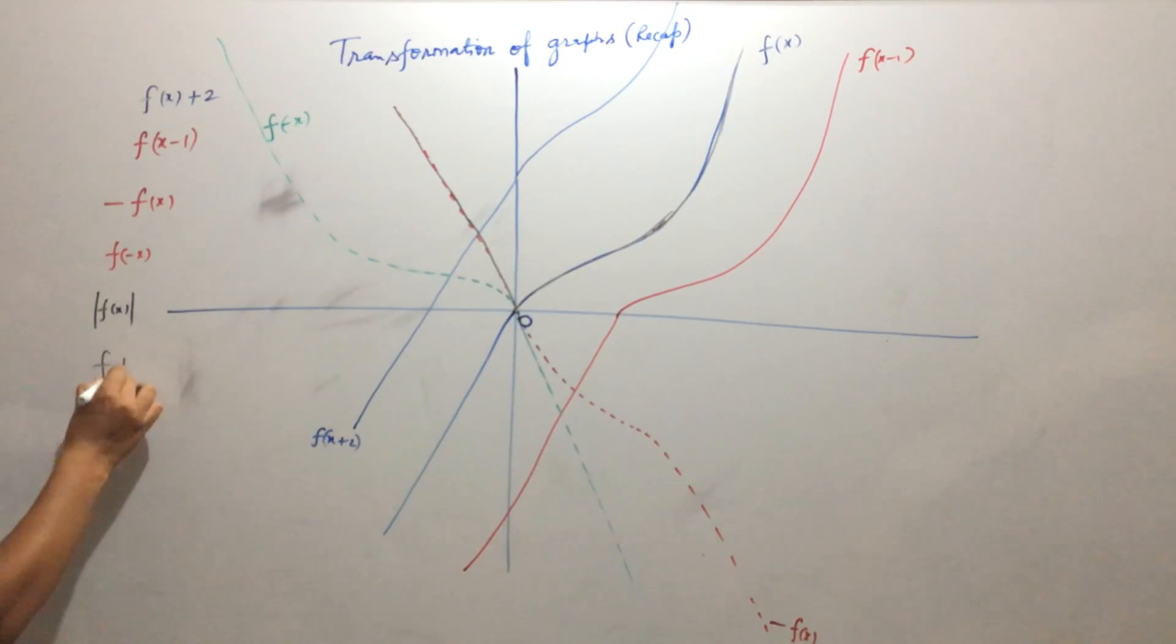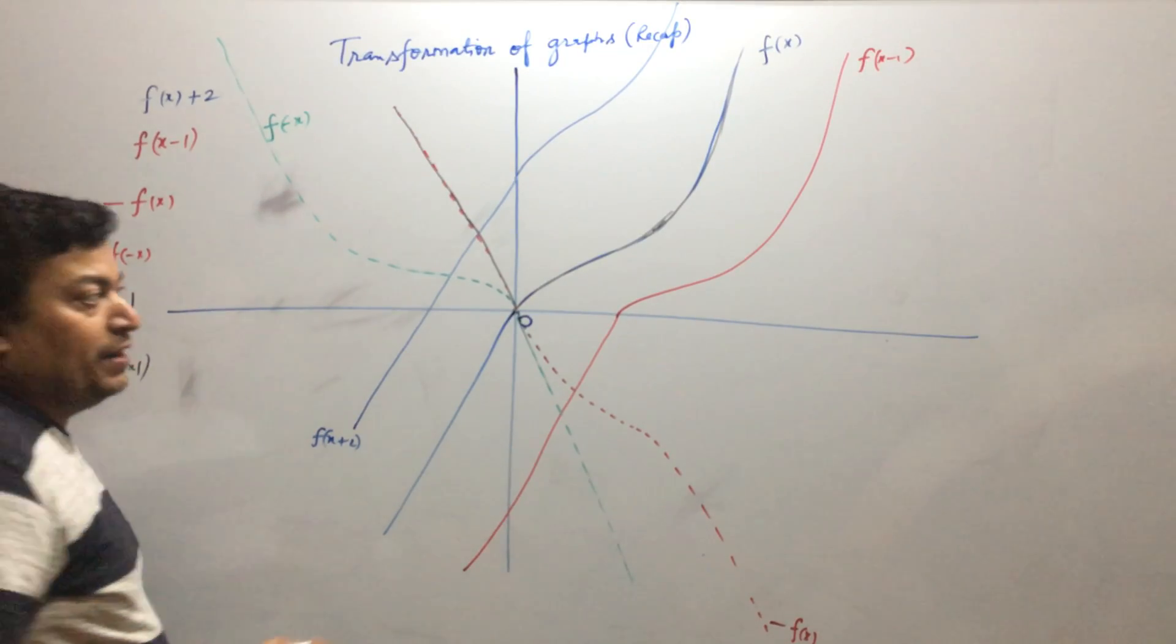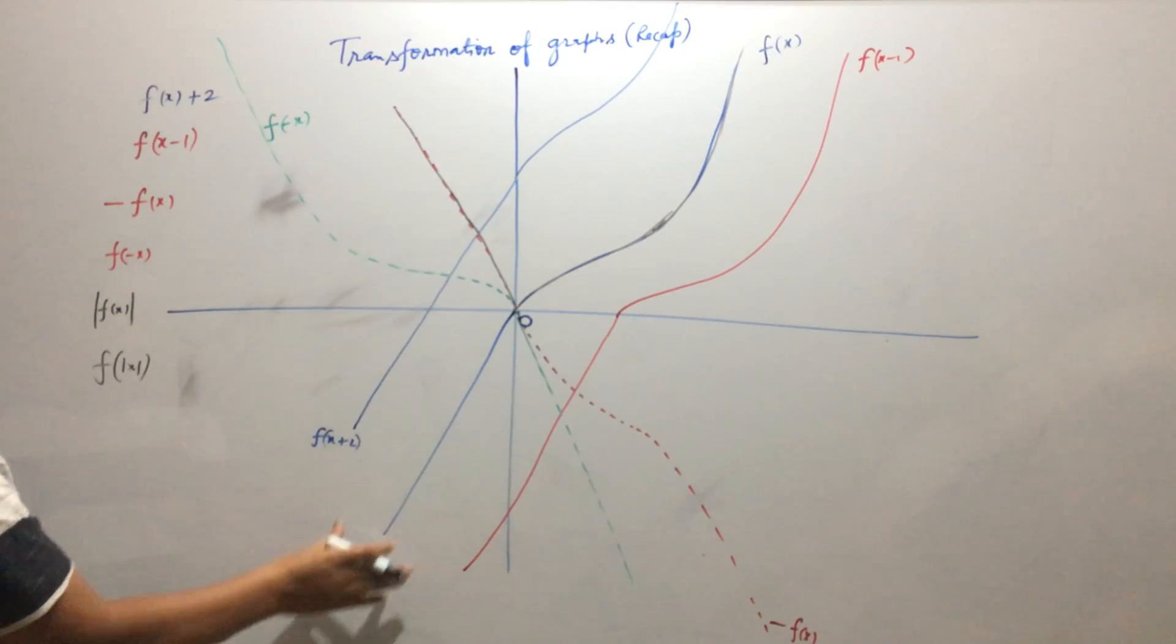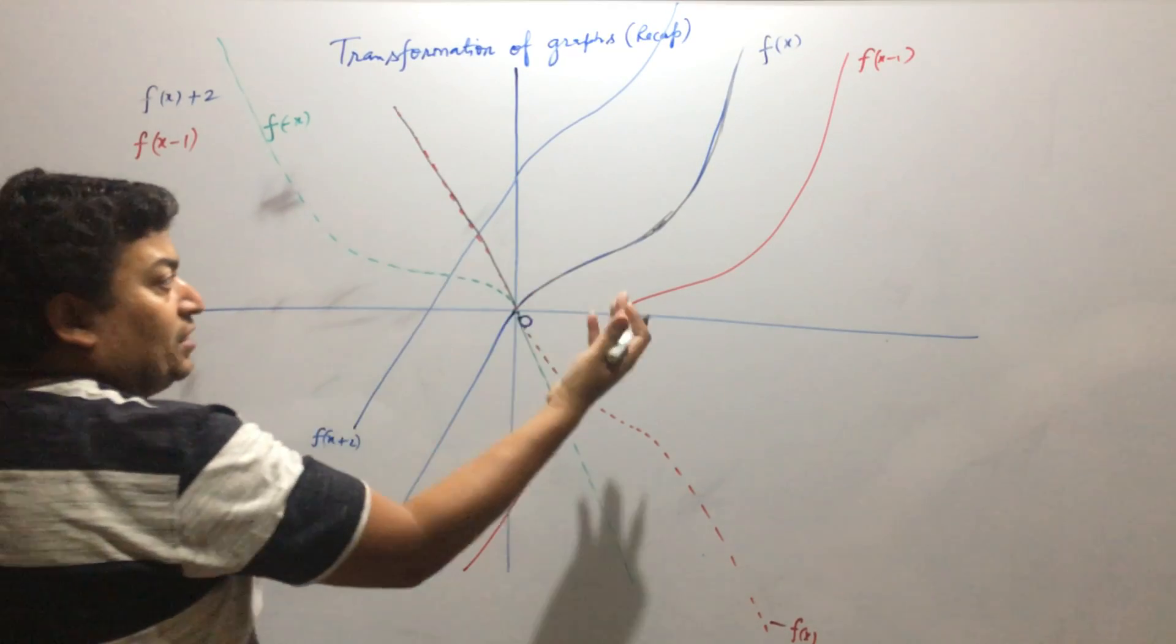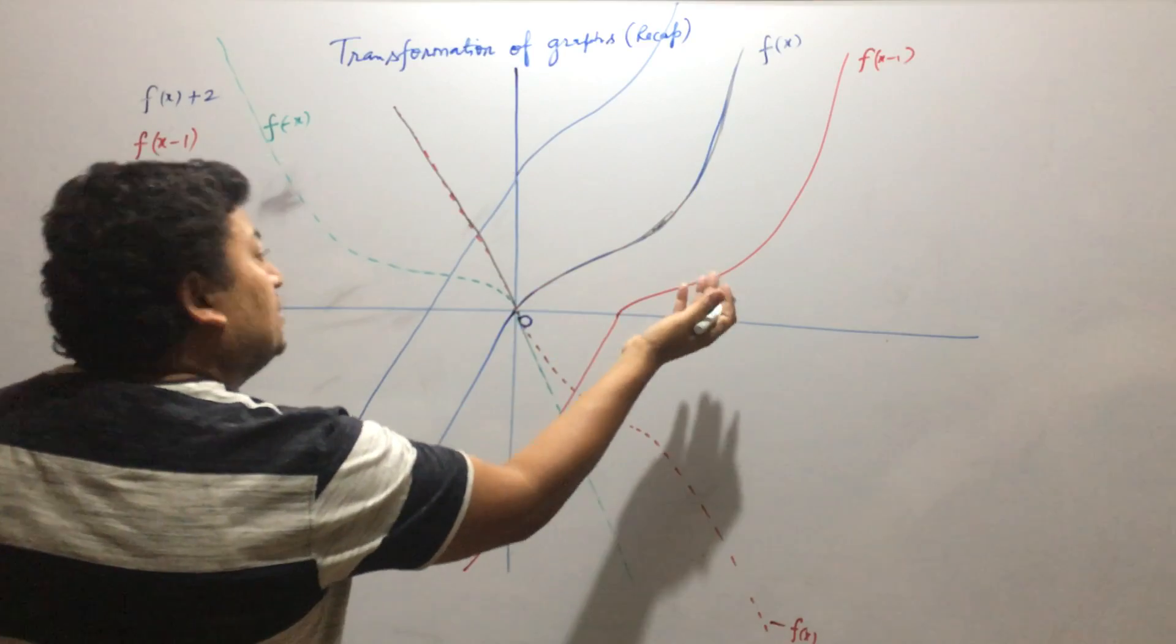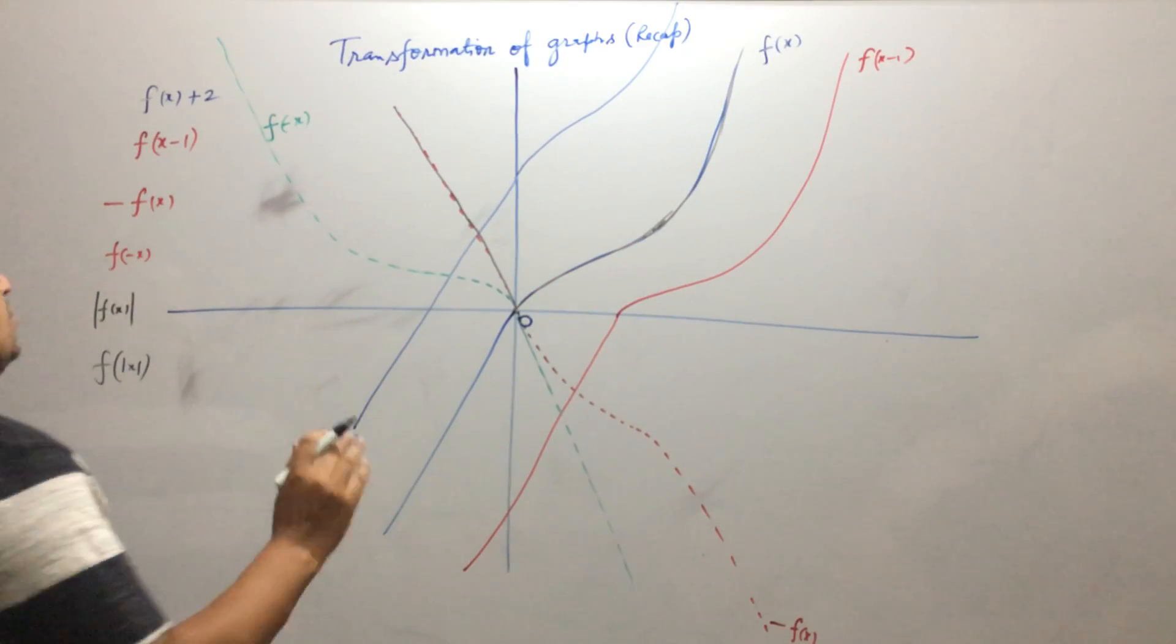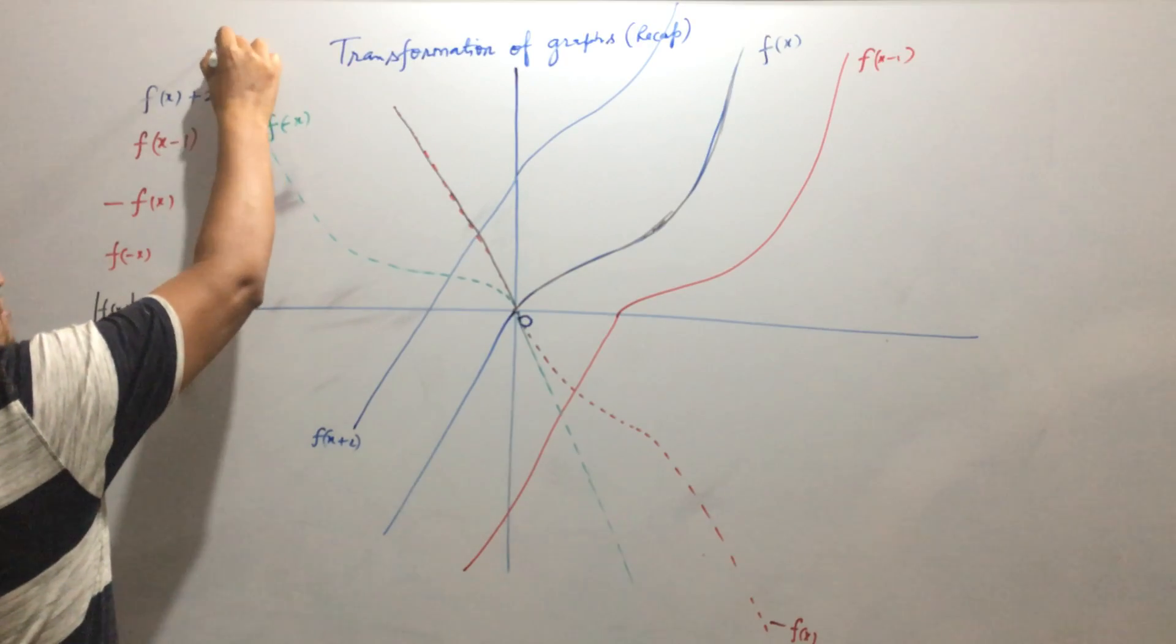Suppose I have to draw a graph of f of mod x. So f of mod x will be obtained by ignoring the graph which is on the left hand side and copying the graph which is on the right hand side to the left. So f of mod x will be like this.